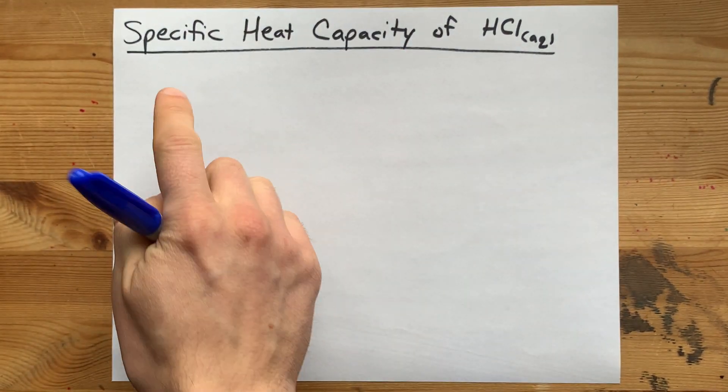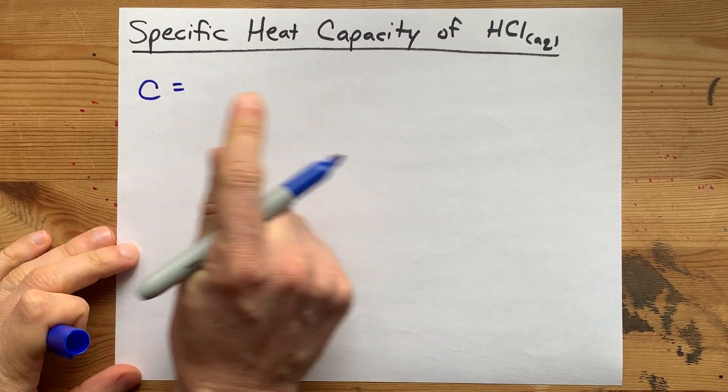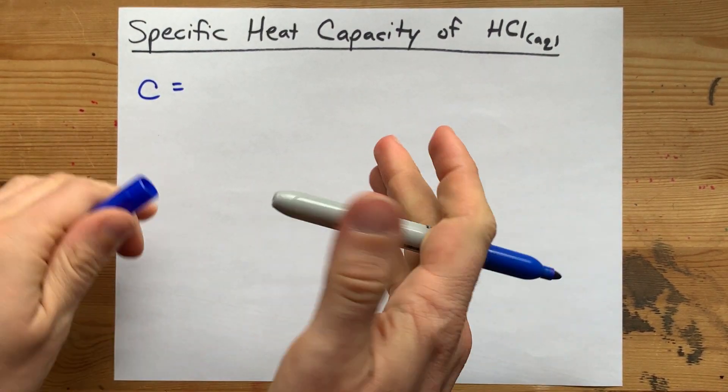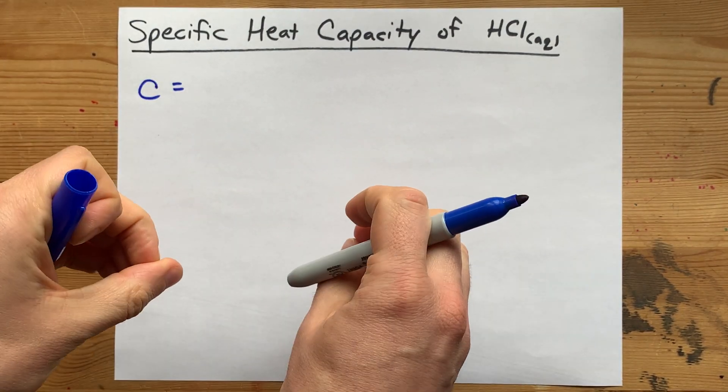You are here because you're looking for the specific heat capacity, or C, for hydrochloric acid, presumably because you poured hydrochloric acid into something else for a thermochemistry experiment that you did.